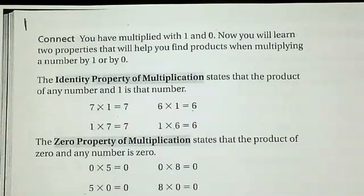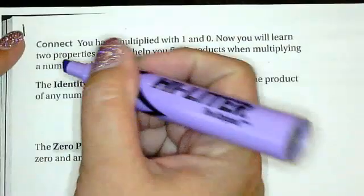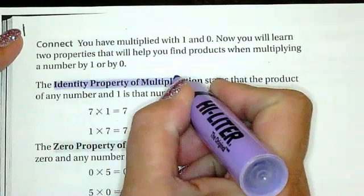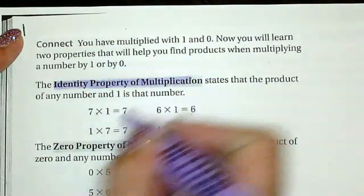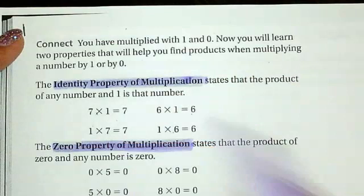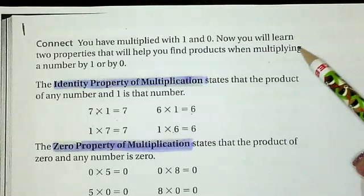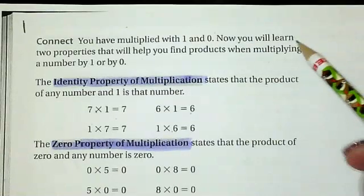So today in math, we are learning about the identity property of multiplication and the zero property of multiplication. We are going to begin by learning what those two things are, starting right here.